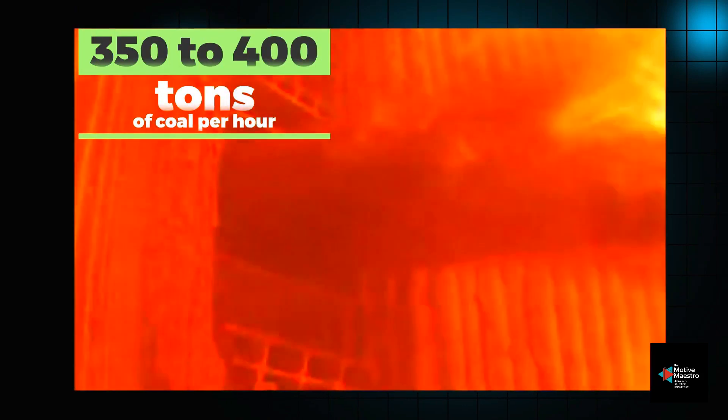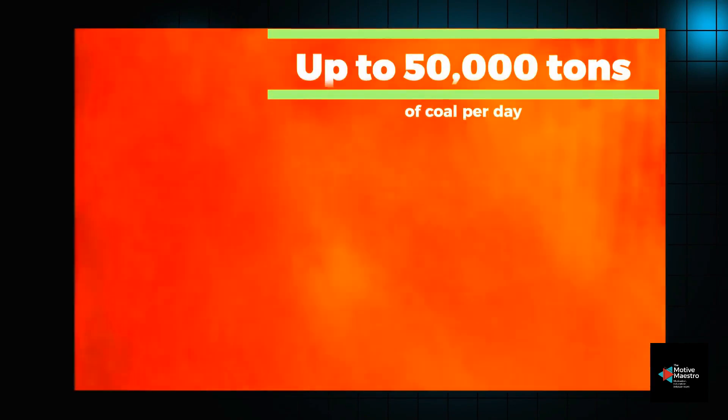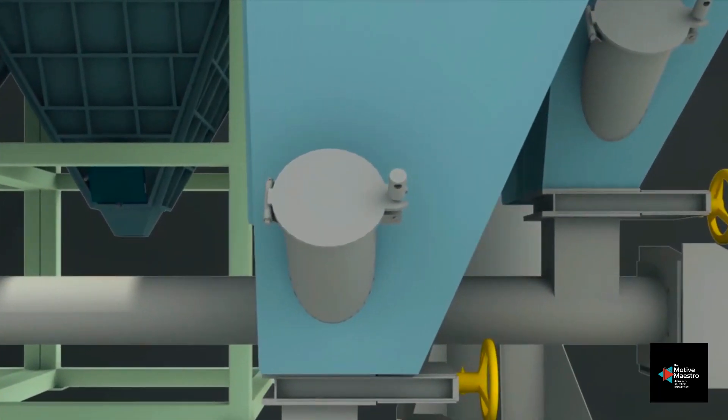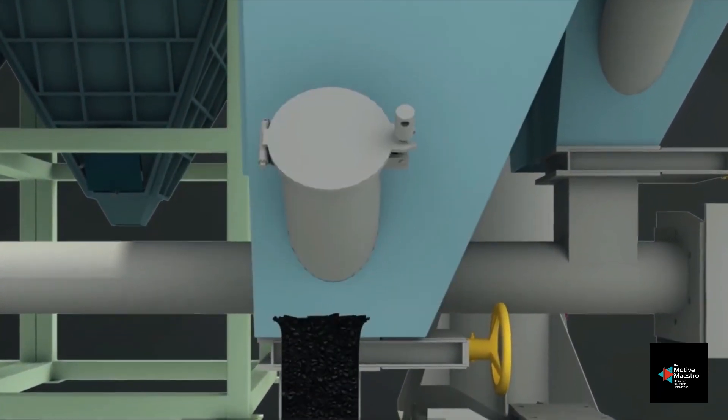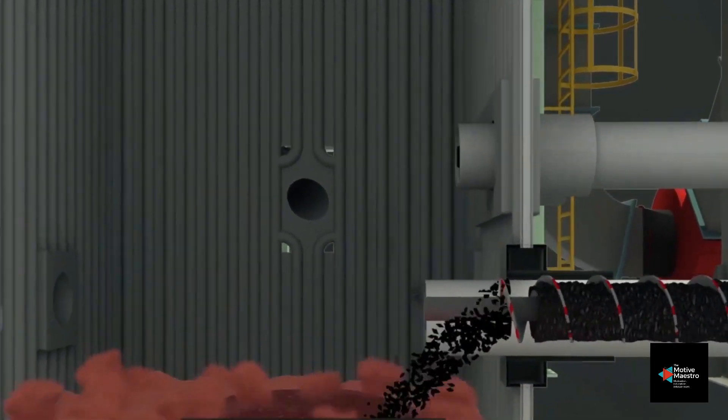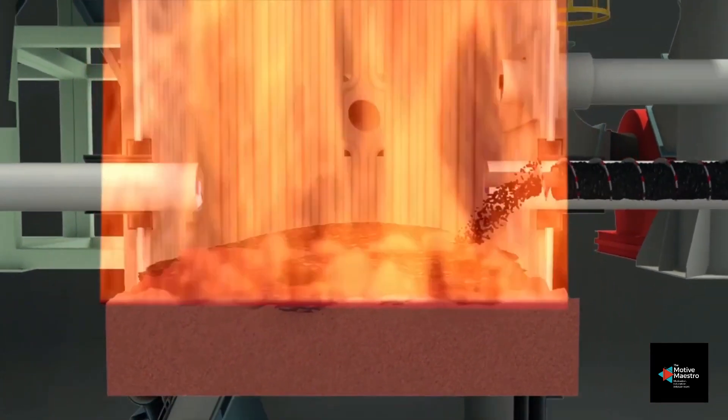Coal dust is blown pneumatically from the pulverizer to the boiler. Inside the boiler we're going to ignite that coal and we're going to get combustion. So that is our fuel system. We may also use oil or natural gas to fire the boiler, at least initially to initiate combustion. It all depends on the design of the boiler itself.